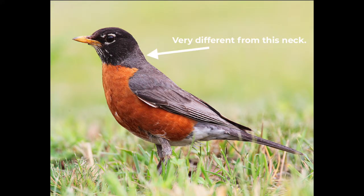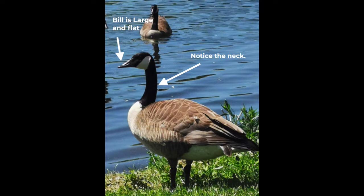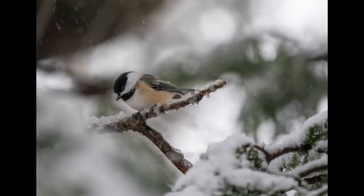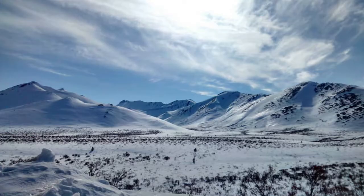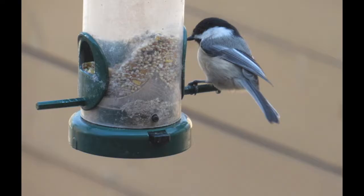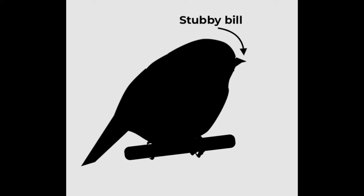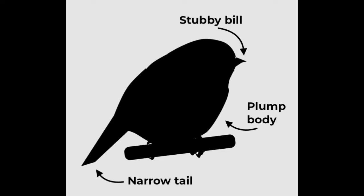Other body parts to keep in mind are the bill shape and length, wings, and the tail. On the smaller end of the bird's size spectrum, we find the chickadee. This little bird is found year-round in the park and can be seen making the most of the winter food supplies and bird feeders. Their silhouette is easy to pick out with their stubby bill, narrow tail, and plump body.